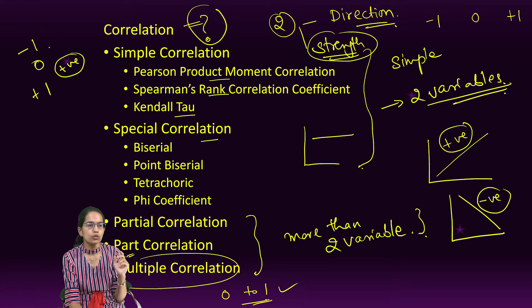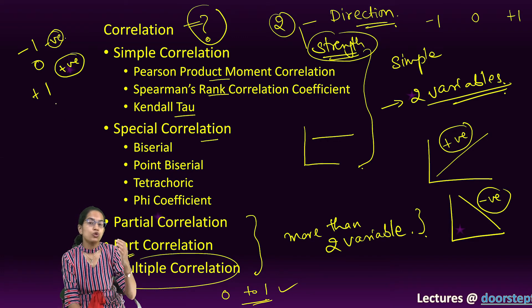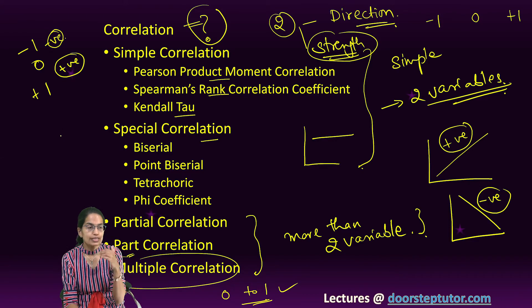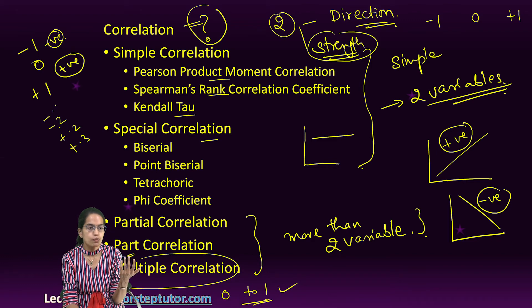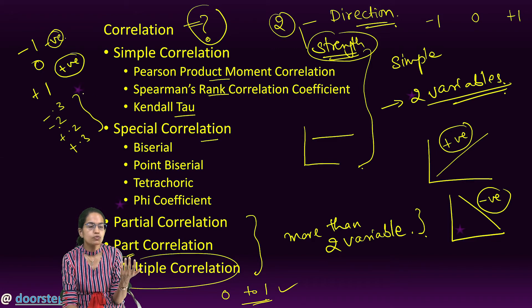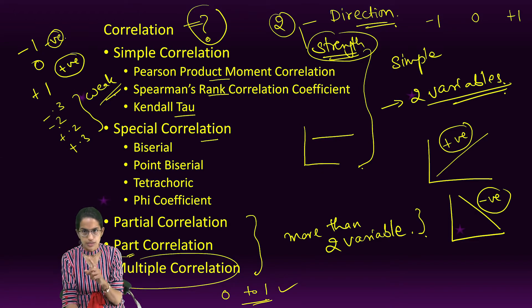Now any value between zero to plus one would be a positive correlation. Any value between zero to minus one would be a negative correlation. Values closer to zero - so let's say if I have minus 0.2, plus 0.2, plus 0.3, minus 0.3 - all these would represent weak correlation. There is a correlation, it could be negative or positive, but it is weak.